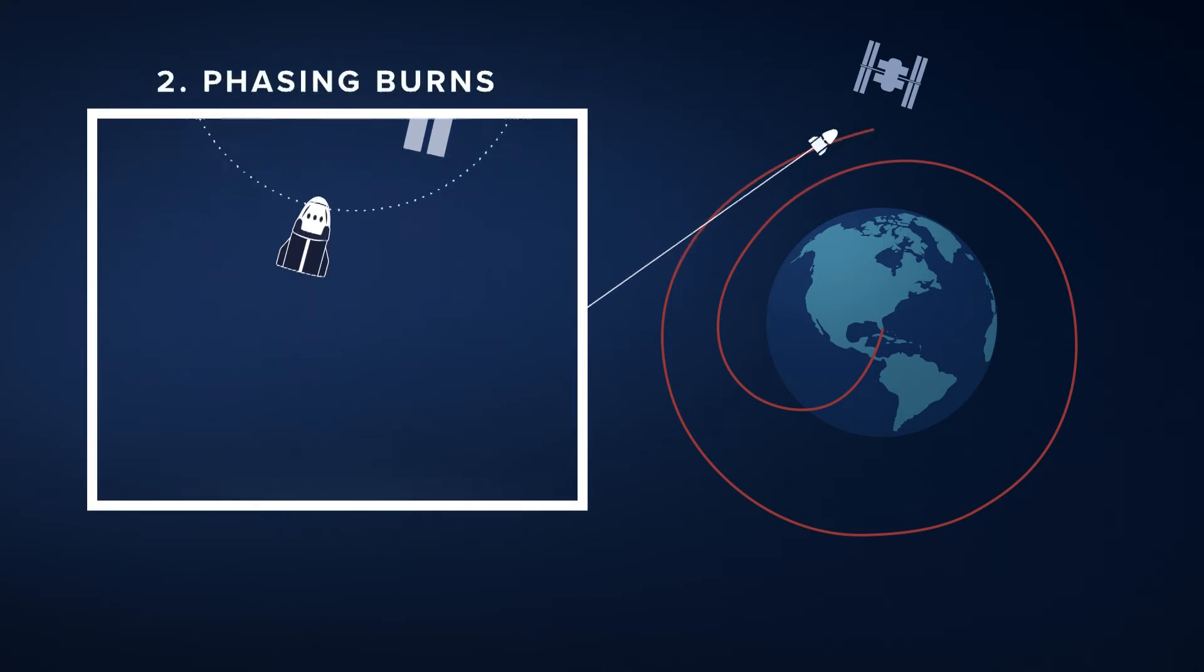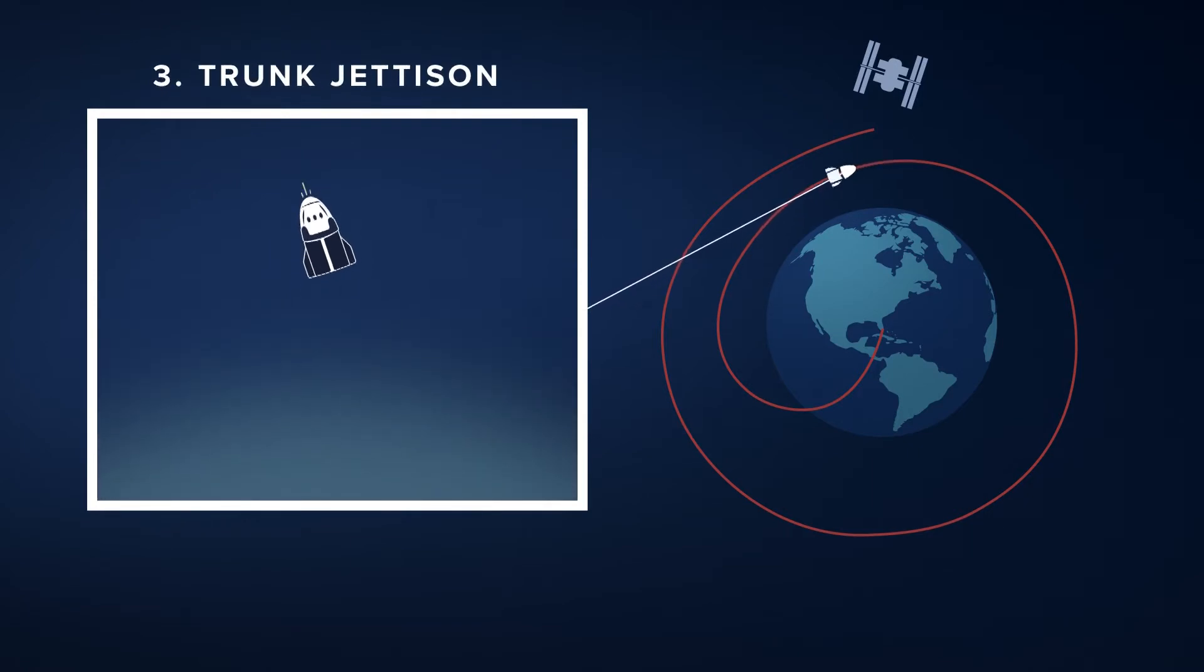The onboard Draco engines will then be used for a series of phasing burns to move Dragon into a lower orbit and orient itself for reentry. As it gets closer to Earth, Dragon will ditch its trunk, aka its service module.